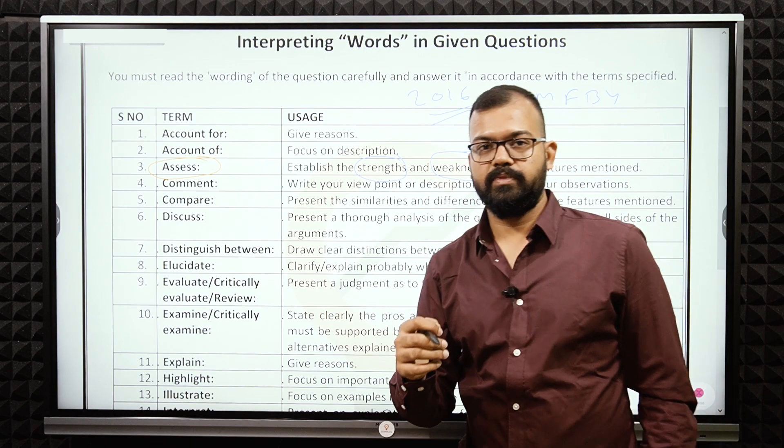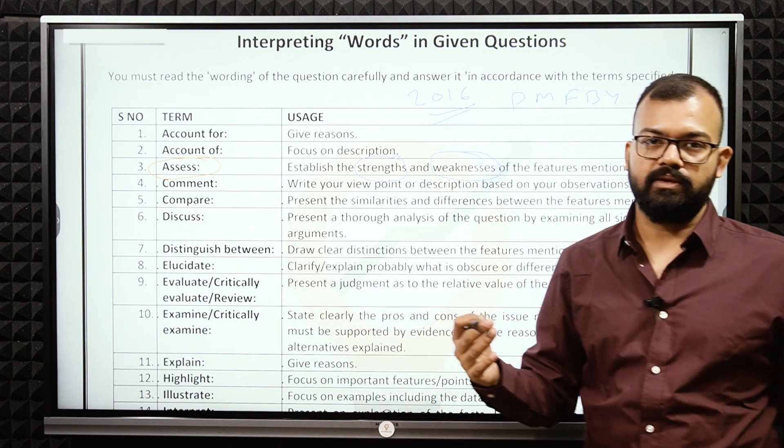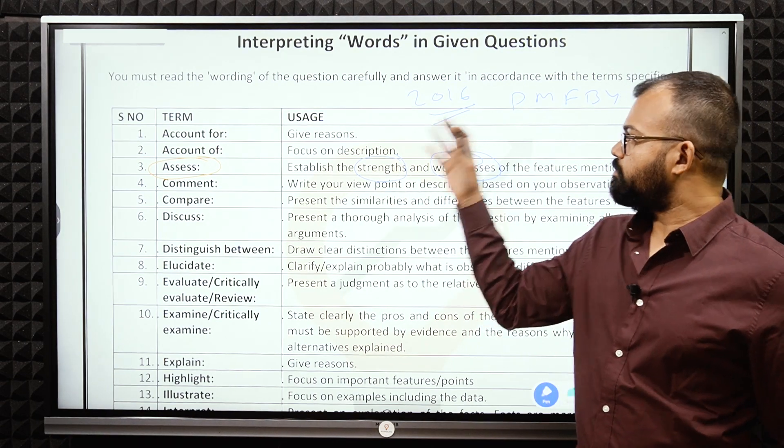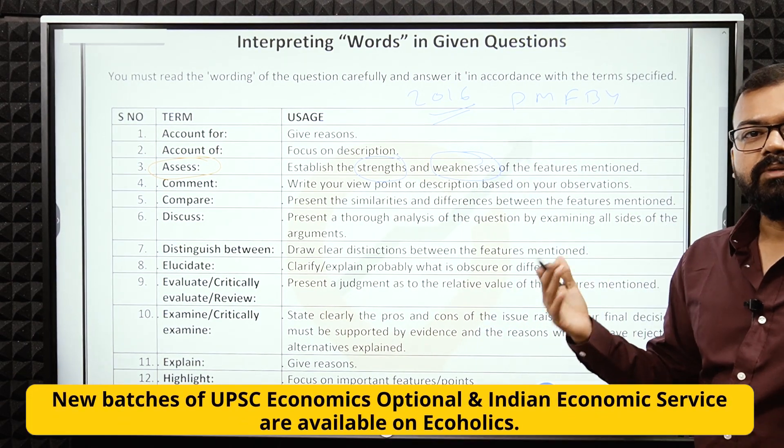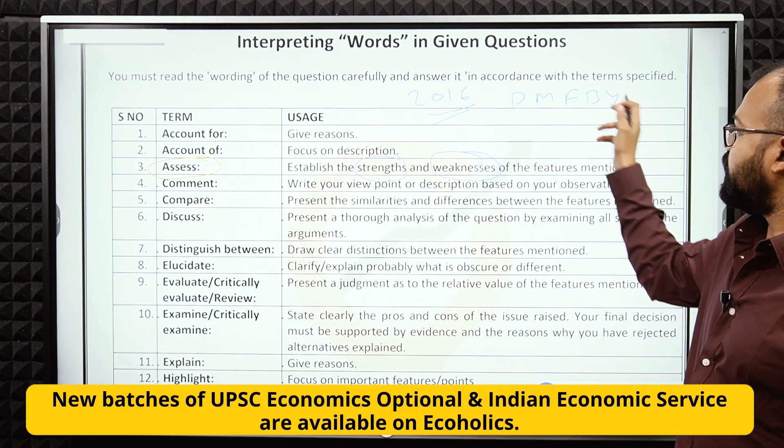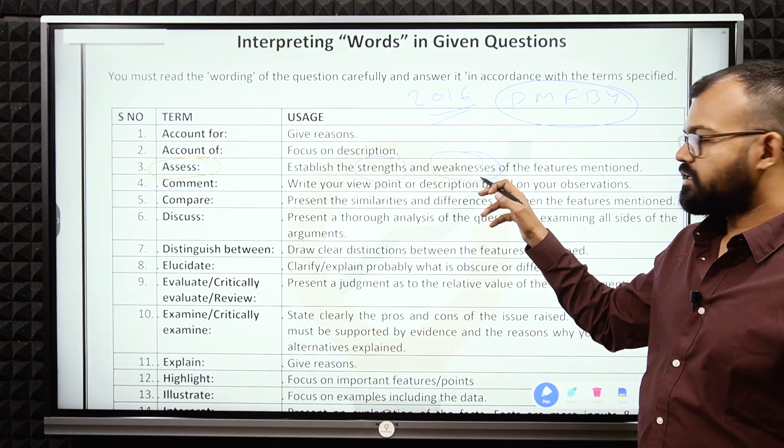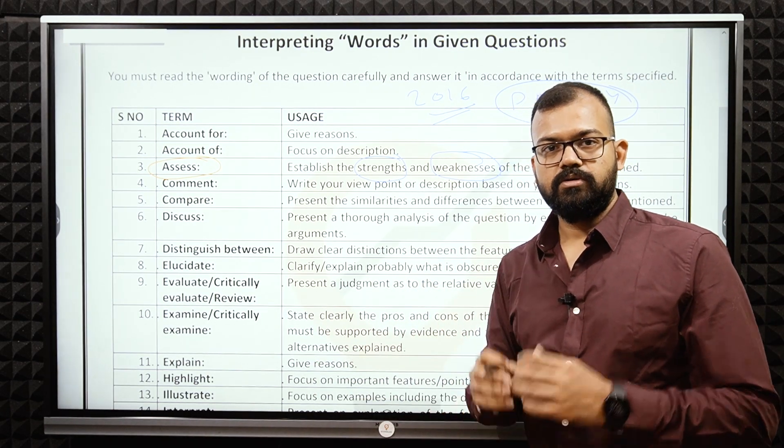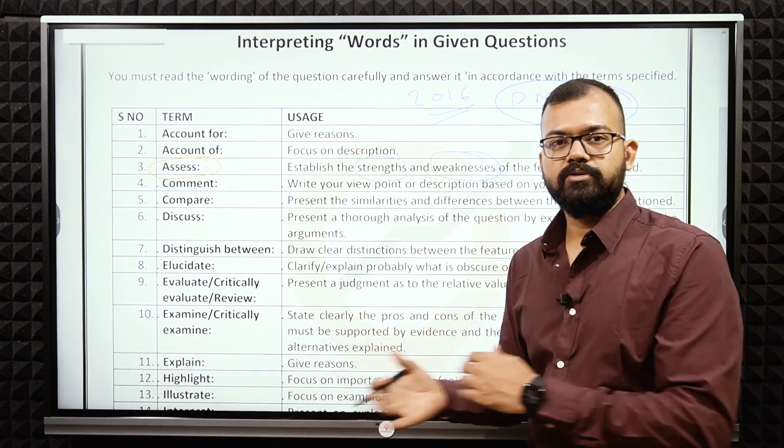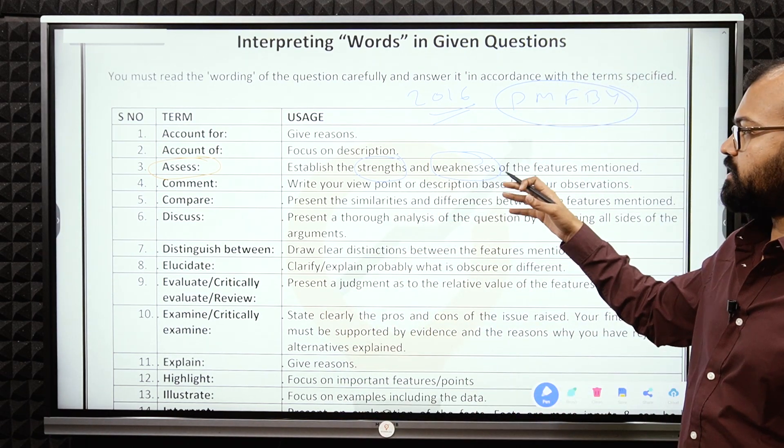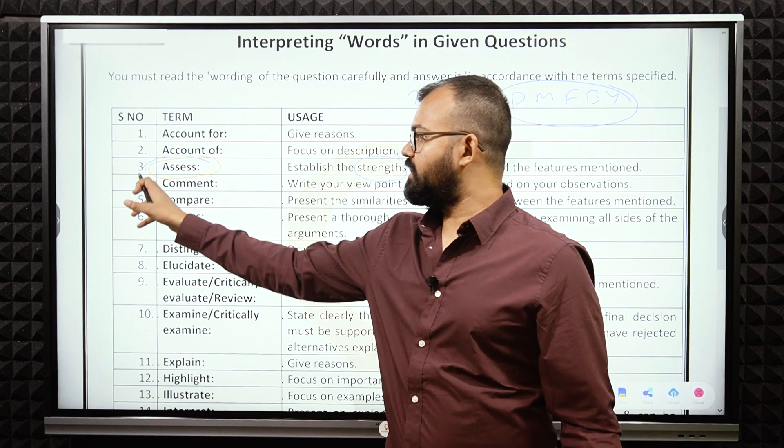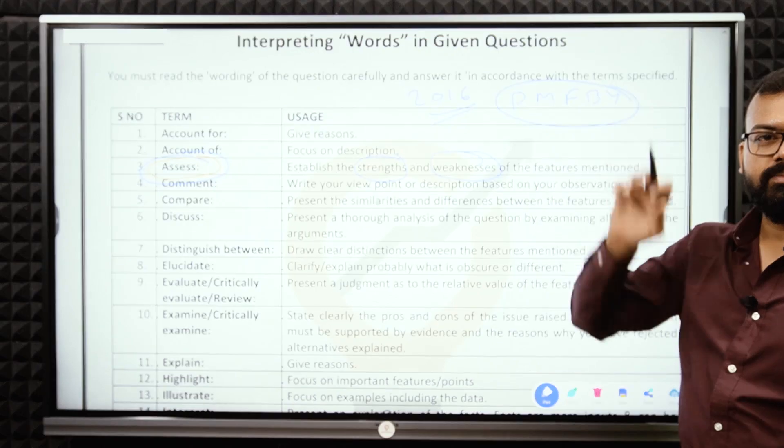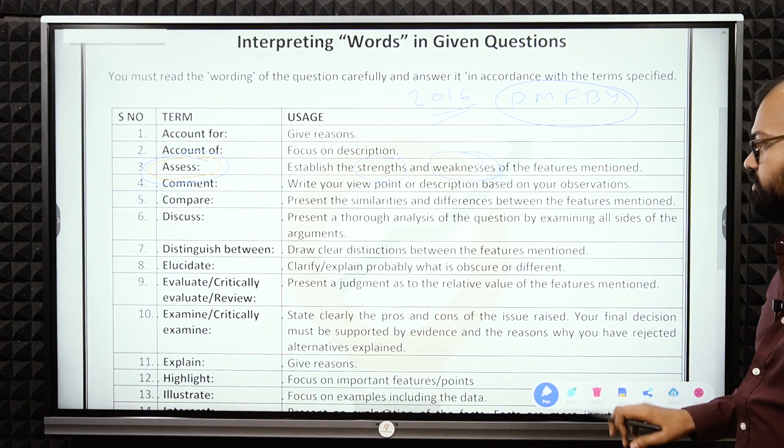If you compare with the previous schemes, national insurance schemes and modified NAIS, these kinds of schemes before PMFBY had certain problems. This scheme rectified those problems. But what are the weaknesses? The timely payment of the premium is not there from the government side. So private insurance company will not be able to disperse the amount. Whenever they are saying assess, you have to assess in terms of strength and weaknesses of a particular scheme.